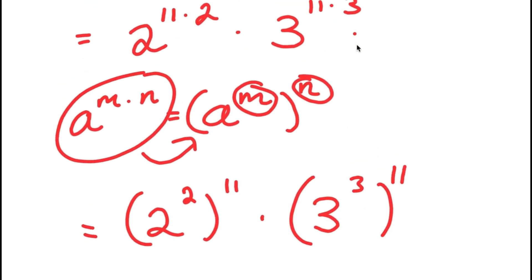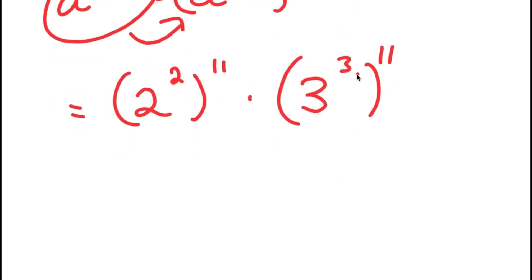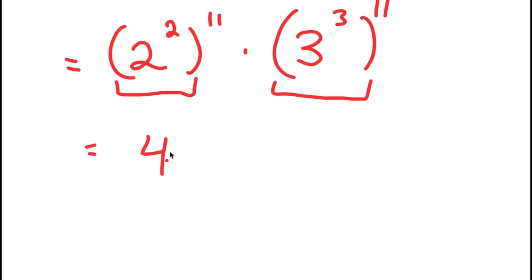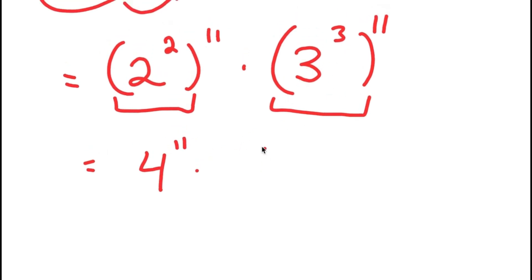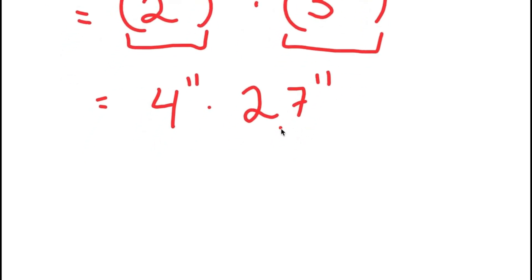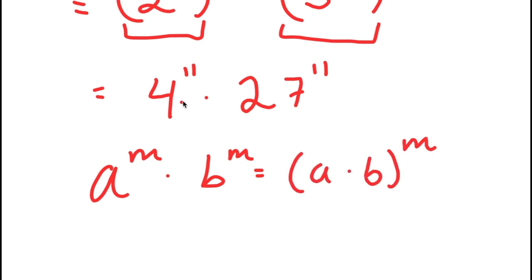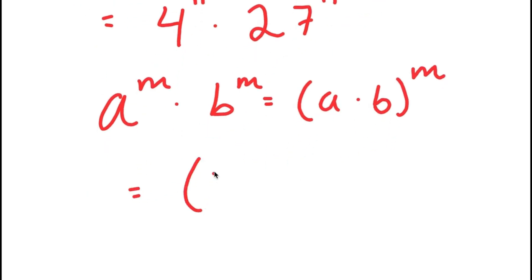I did the same thing with 3 to the power of 11 times 3. Now I'm going to simplify what's in the parentheses. I have 2 squared in the parentheses, which equals 4 to the power of 11, and 3 to the power of 3, which equals 27 to the power of 11. Now, using the property that a to the power of m times b to the power of m equals a times b to the power of m, I get 4 times 27 to the power of 11.